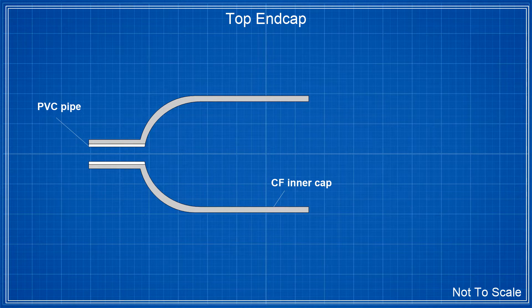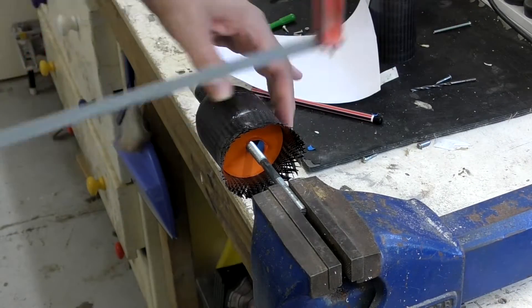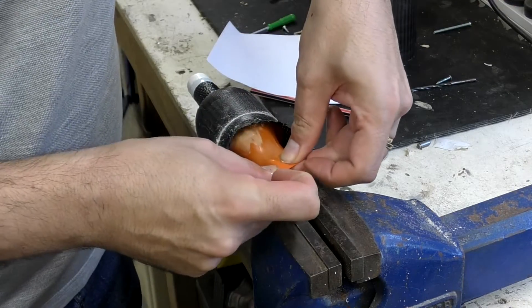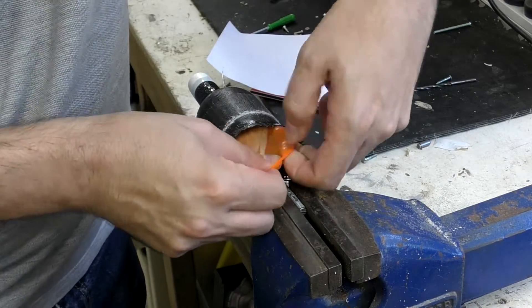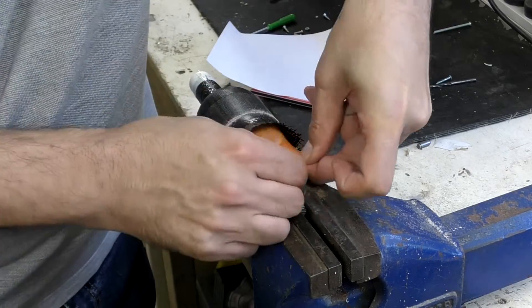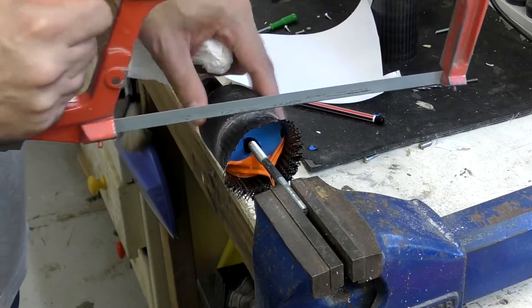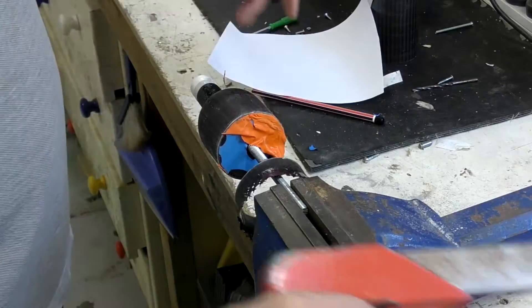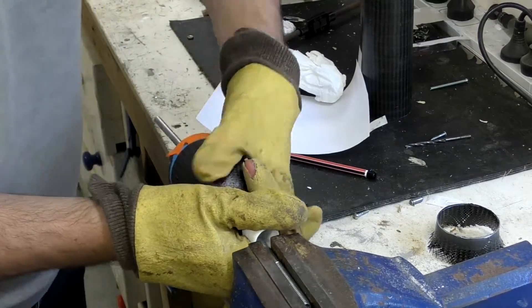When this is done, we end up with a cross section like this. The next day we can remove it from the mold. We pull on the balloon to loosen it up and then trim off the excess. Then it's a simple matter of pushing the mold out of the end cap.